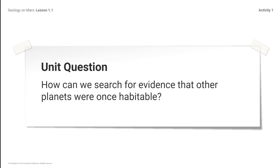The unit question: How can we search for evidence that other planets were once habitable? Real scientists are currently looking for evidence of habitability on other planets. Taking on the role of student planetary geologists will give us a chance to do some of the work real scientists do and use what we learned to answer this question. Note that the unit question refers to evidence that planets were once habitable — scientists are interested in evidence that a planet not habitable now could have been habitable in the past.